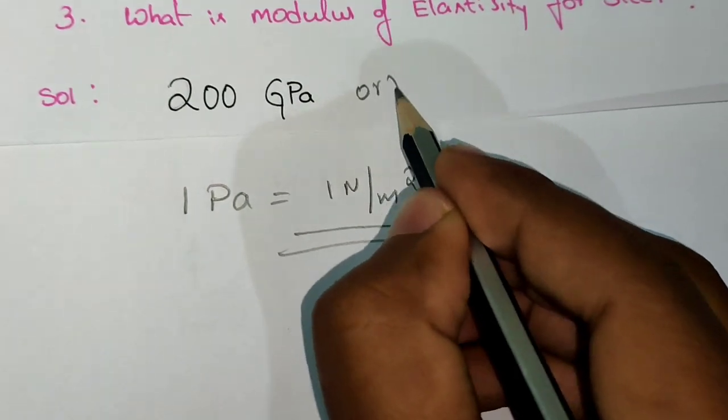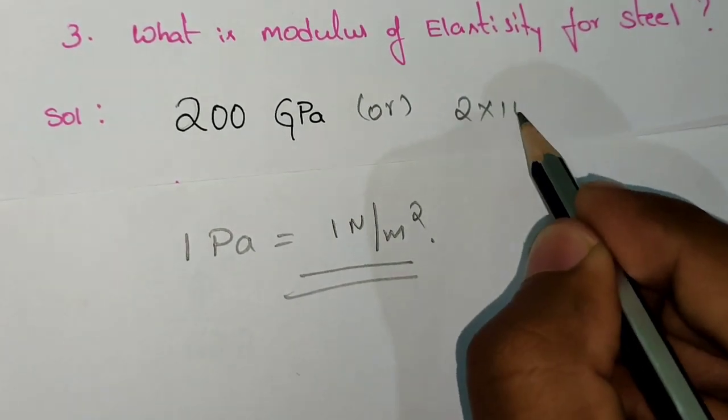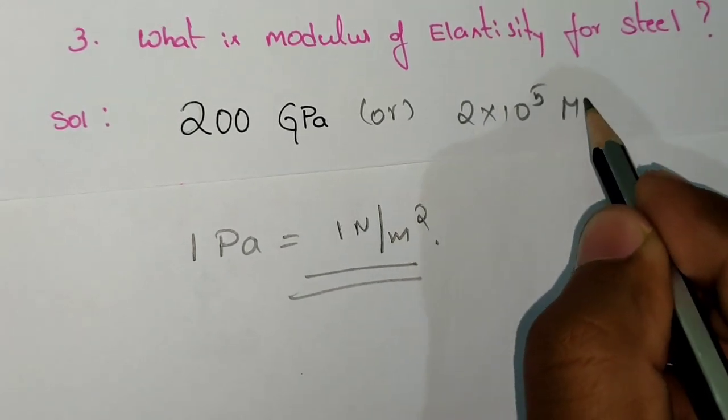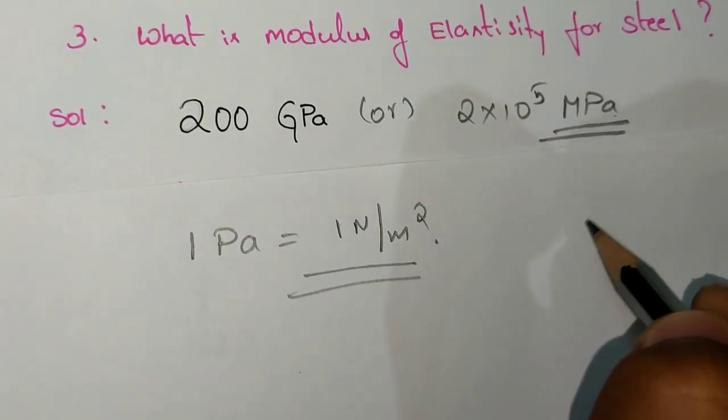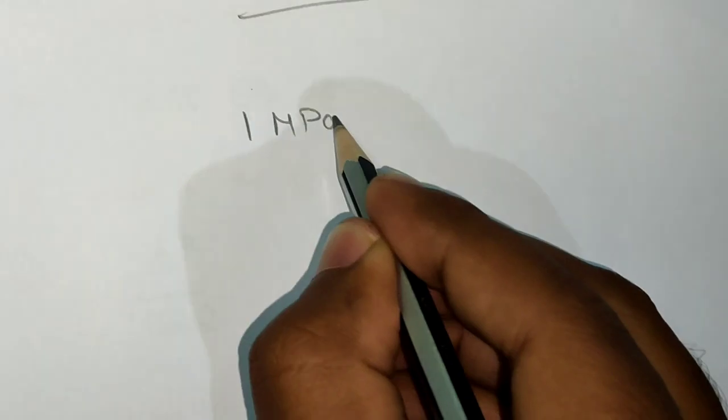200 gigapascals is also given in another form as 2×10^5 megapascals. You have to know the difference between these units. Let me explain.